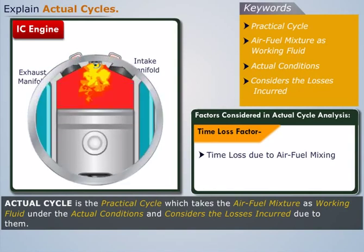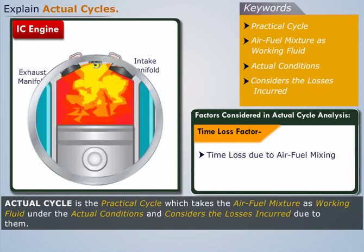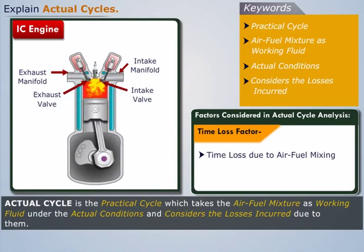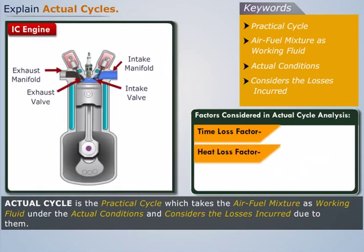Also in the IC engine when the combustion takes place, it takes place over a definite period of time which causes the loss of efficiency. This loss is known as time loss due to progressive combustion.